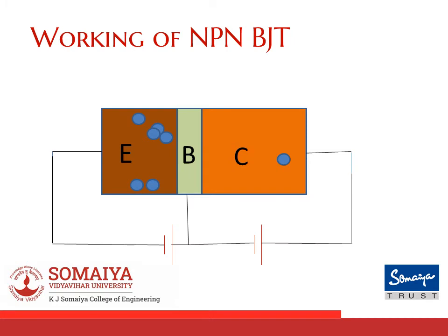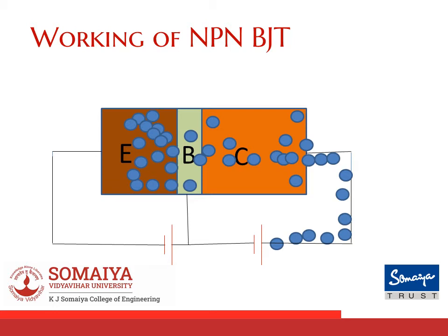Consider an NPN transistor in forward active mode. As you can see, the input junction is forward biased and the output junction is reverse biased. As you increase the forward bias, there will be more free charge carriers created in the emitter junction. As you increase this forward bias, the free charge carriers, which are electrons in the case of NPN, will gain enough energy to move from the emitter-base junction to the base-collector junction, and then from the base-collector junction to the collector and on to the positive plate of the battery.